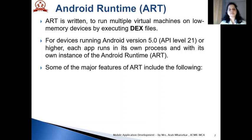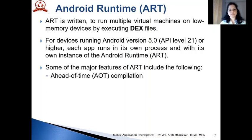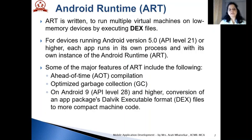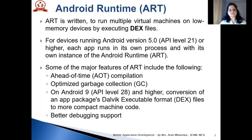Major features of ART include ahead-of-time compilation, AOT, and optimized garbage collection. On Android 9, that is API level 28 and higher, conversion of an app package's Dalvik executable format files to more compact machine code. That makes the app process fast, with better debugging support.